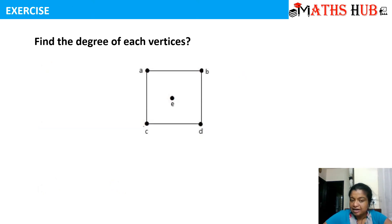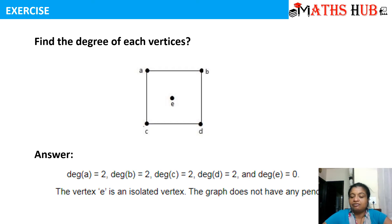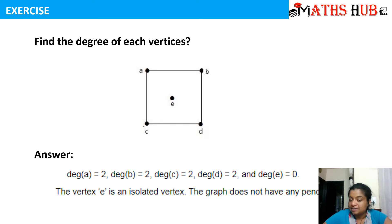Now let's talk about another exercise where we find the degree of each vertex. The degree of vertex A is 2, degree of vertex B is 2, degree of vertex C is 2, degree of vertex D is 2, and degree of vertex E is 0. So in this case there is one isolated vertex E and there are no pendant vertices in this graph.